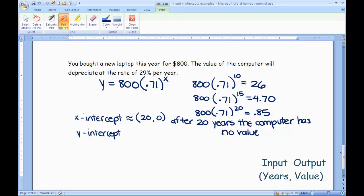The y-intercept would be the value of the computer at year zero. In other words, the beginning amount. Well, that one's easy. It's $800. So the y-intercept would be (0, 800). In other words, in the beginning, the computer was worth $800.